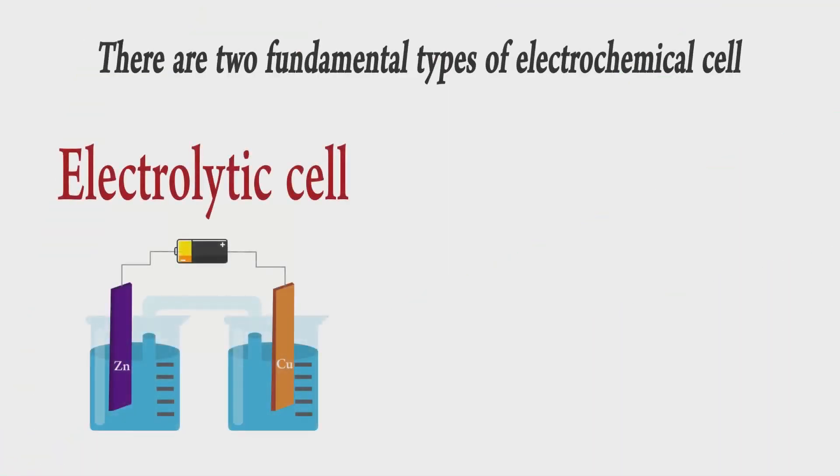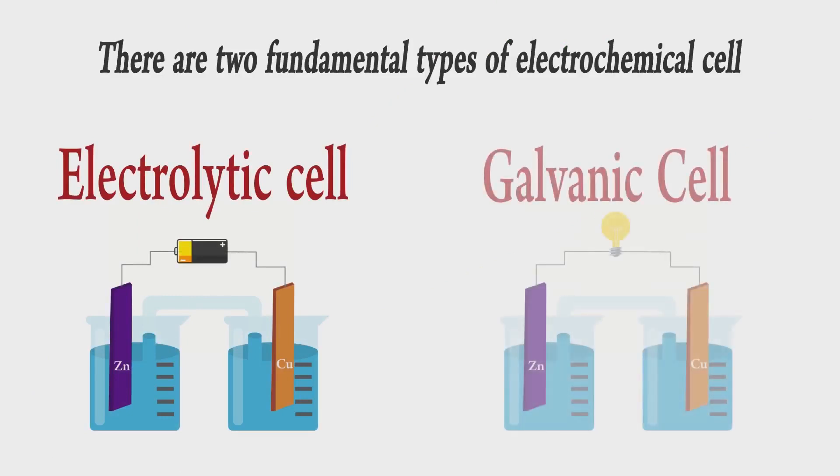There are two fundamental types of electrochemical cells: electrolytic cell and galvanic cell. An electrolytic cell converts electrical energy into chemical energy. The redox reaction is not spontaneous and electrical energy must be supplied to initiate the reaction.